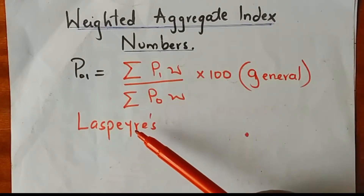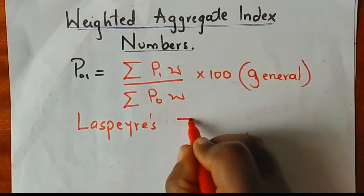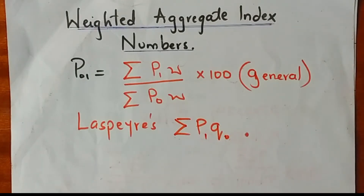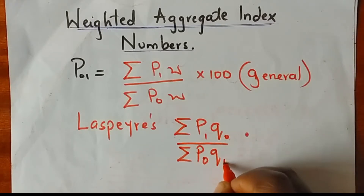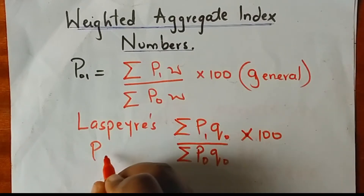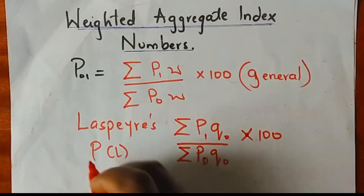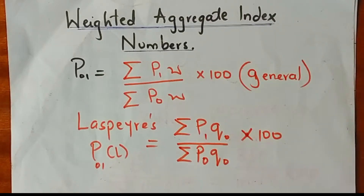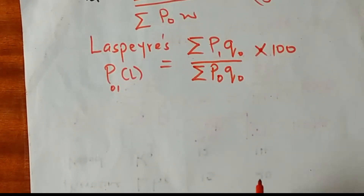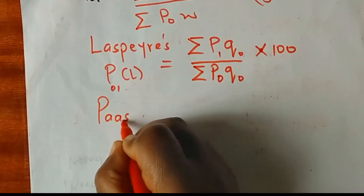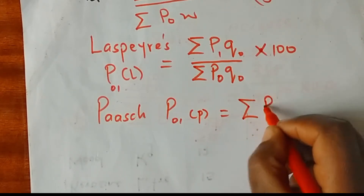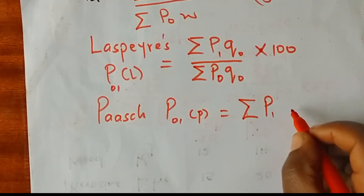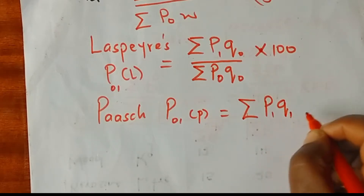For the Laspeyres method, the weight used is the quantities at the base period, commonly written as Q0. For the Paasche method, we use the same general expression but in this case the weight is the quantities at the current time period, Q1.